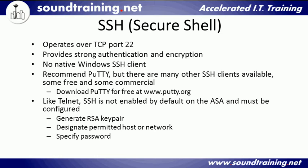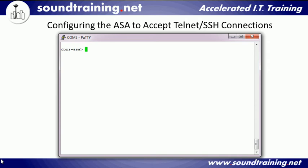Like Telnet, SSH is not enabled by default on the ASA — you must configure it. There are three steps: you have to generate the RSA key pair, you have to designate permitted hosts or network by IP address, and then you have to specify a password. Let's go ahead and configure the ASA to accept incoming Telnet connections, then we'll configure it to accept incoming SSH connections.